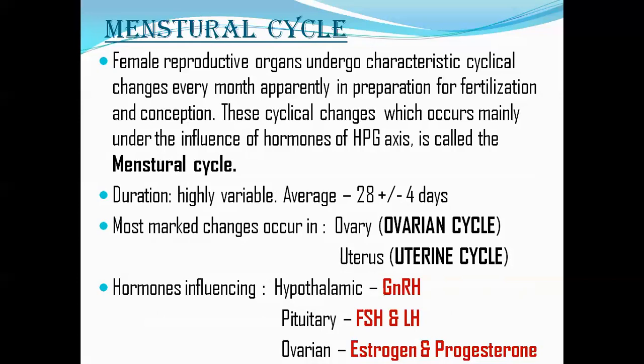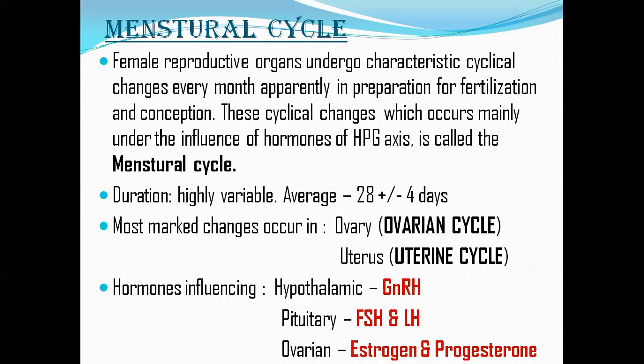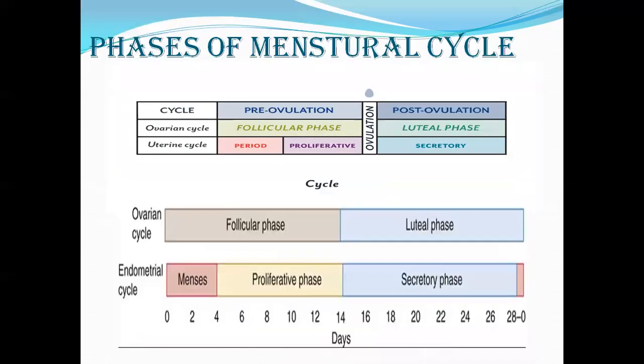The duration of the menstrual cycle is highly variable — the average is about 28 days, plus or minus 4 days, so from 24 to 32 days is the common duration, though it varies highly from person to person. Changes occur in all organs but most markedly in the uterine and ovarian ones, which is why we call them the ovarian cycle and the uterine cycle.